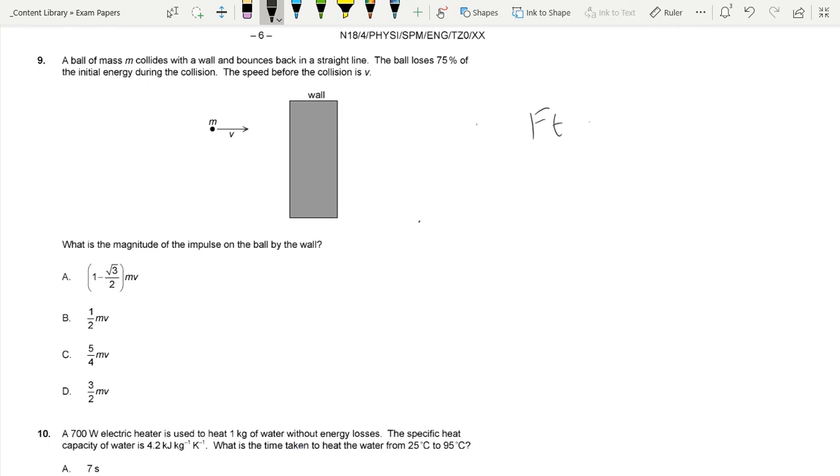First, we want to find the impulse. Impulse is found using the equation force times time equals impulse equals change in momentum. Rather annoyingly, they've used v for the initial velocity, whereas we would normally use v for final velocity, so we need to be careful with that - that's one possible pitfall. The second is that the question says the ball loses 75% of the initial energy, not momentum, so we need to think about this in terms of energy.